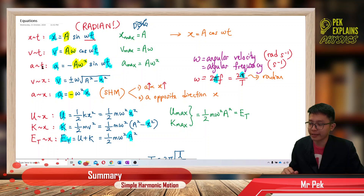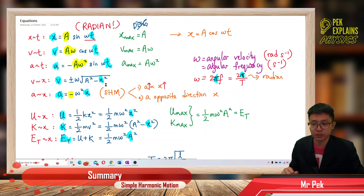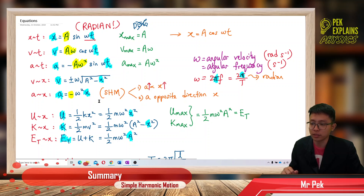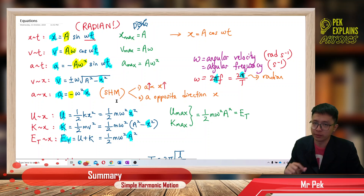We also have the velocity-displacement equation: v = ±ω√(A² − x²), and the acceleration-displacement equation: a = −ω²x. This last equation is the most important in simple harmonic motion because it defines what SHM actually is.